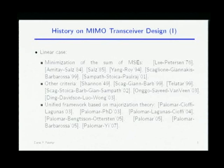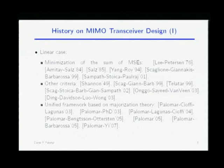More recently, some people started considering other criteria — maximizing some kind of SNR, minimizing the bit error rate. Then in 2003, there was a unified framework based on majorization theory by which you could design all these transceivers for most cost functions you can think of. I talked about that paper two years ago — how to design linear transceivers for a family of Schur-convex and Schur-concave functions. Today, it's going to be more general for both the linear and decision feedback cases.